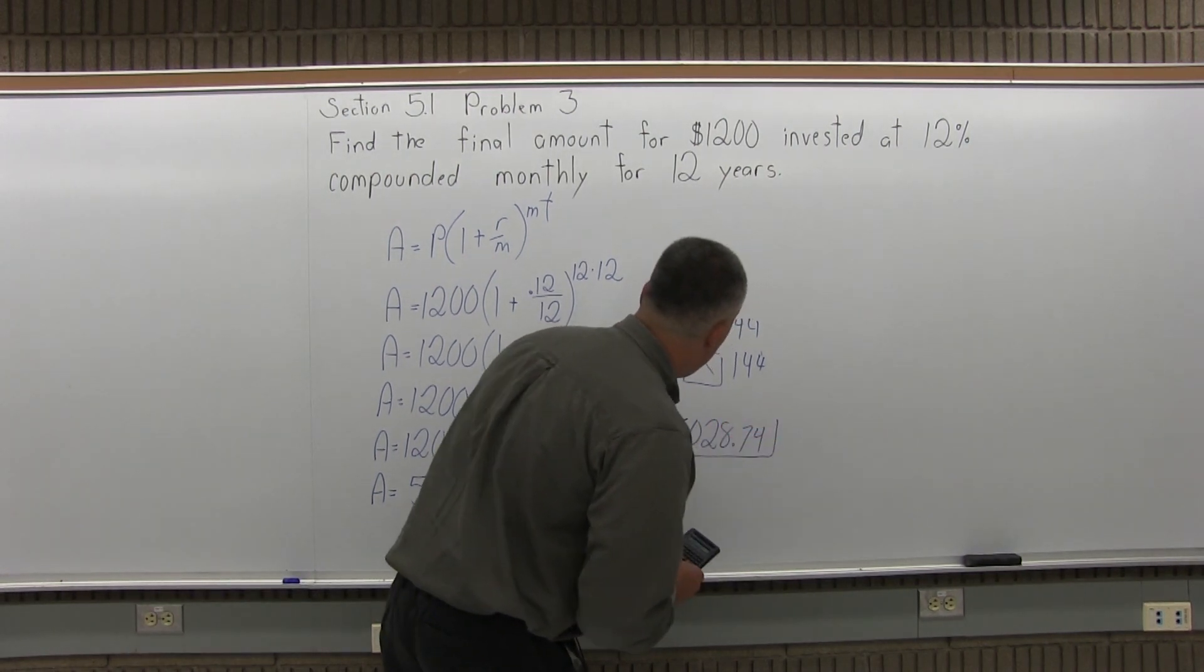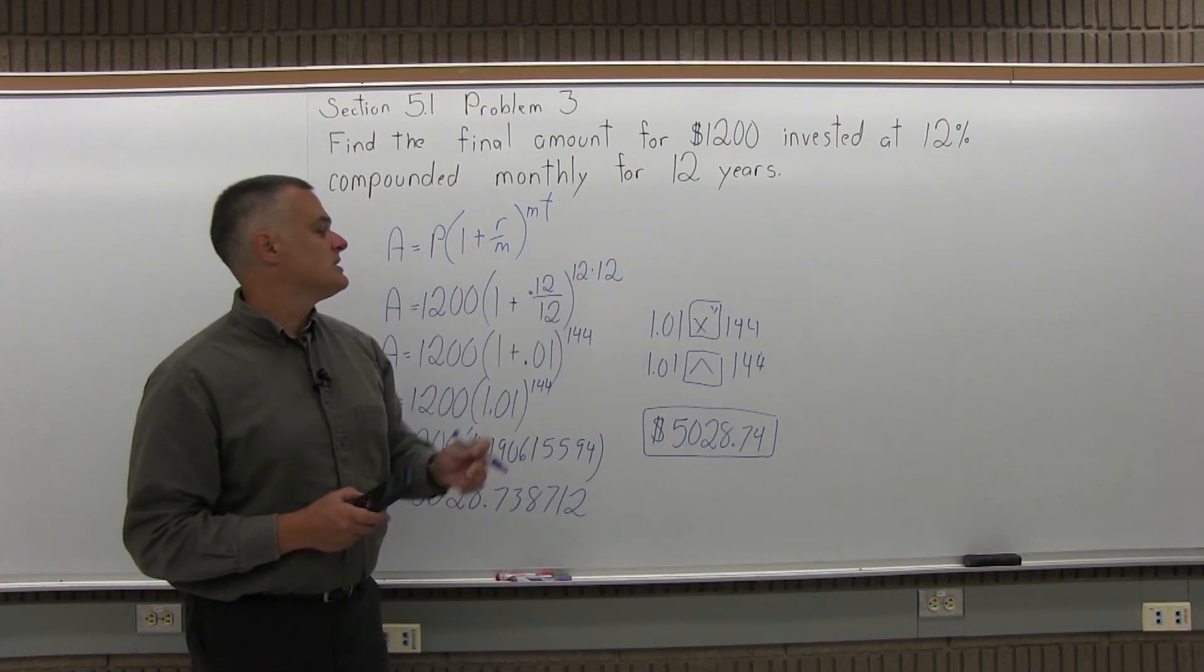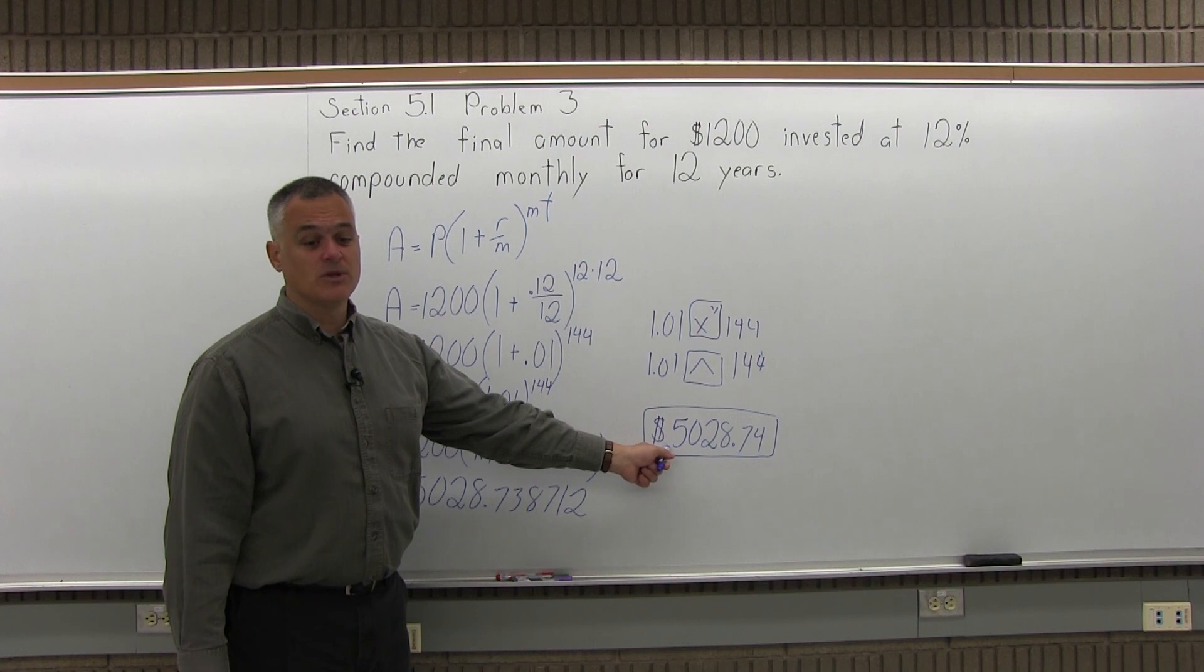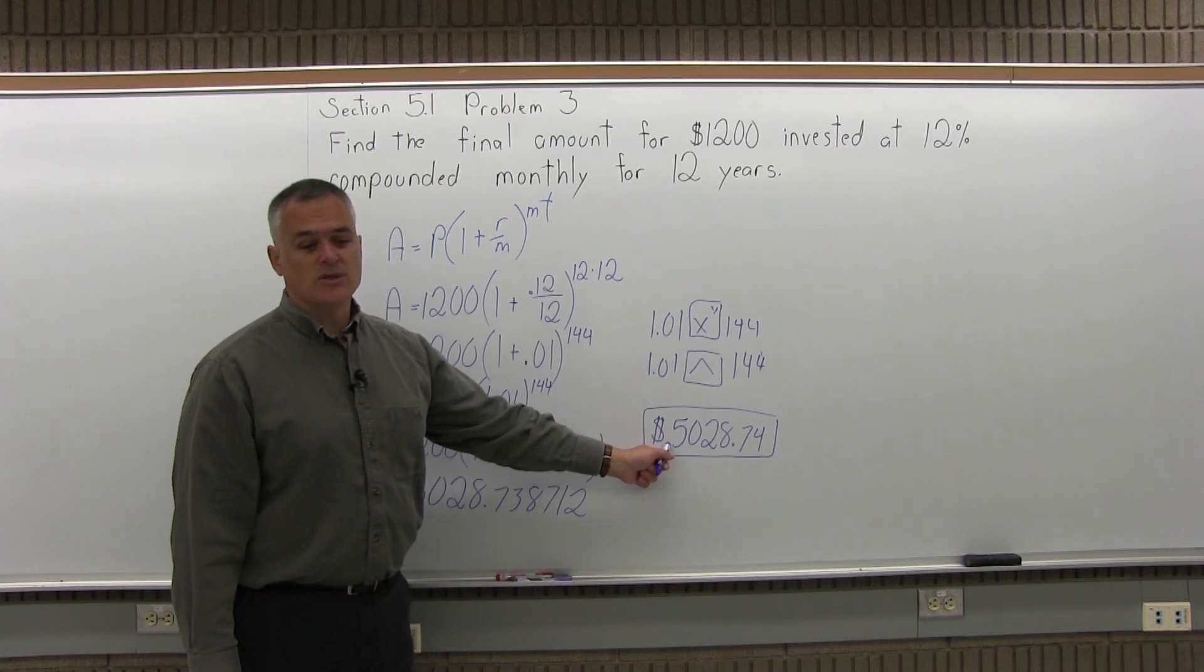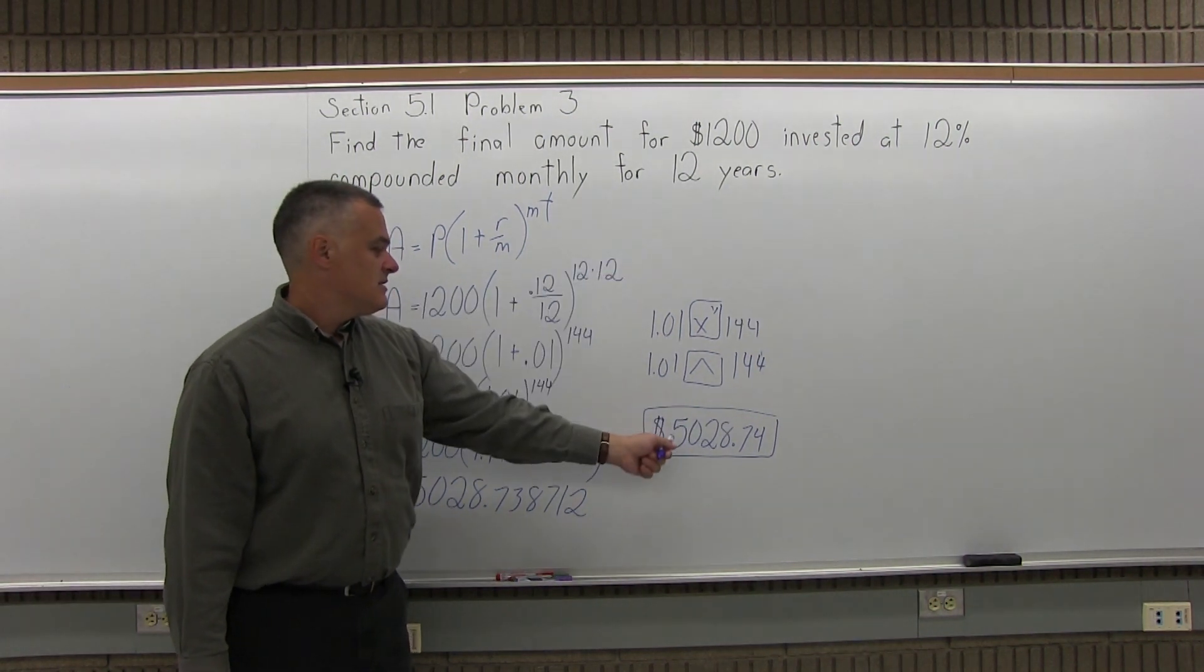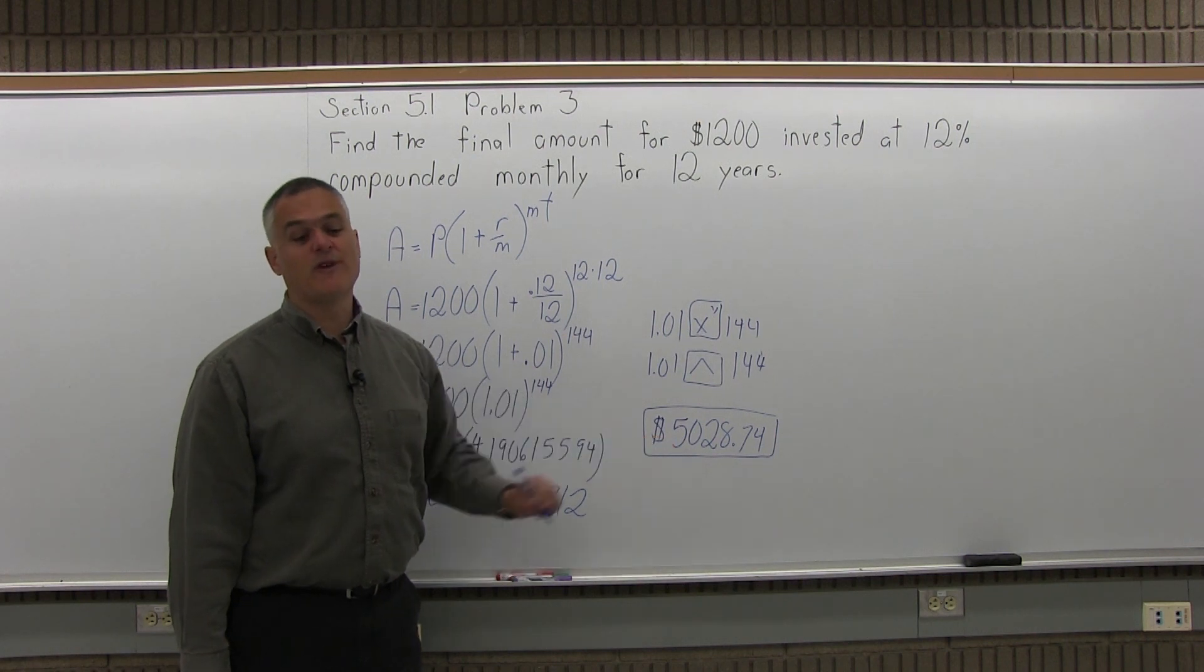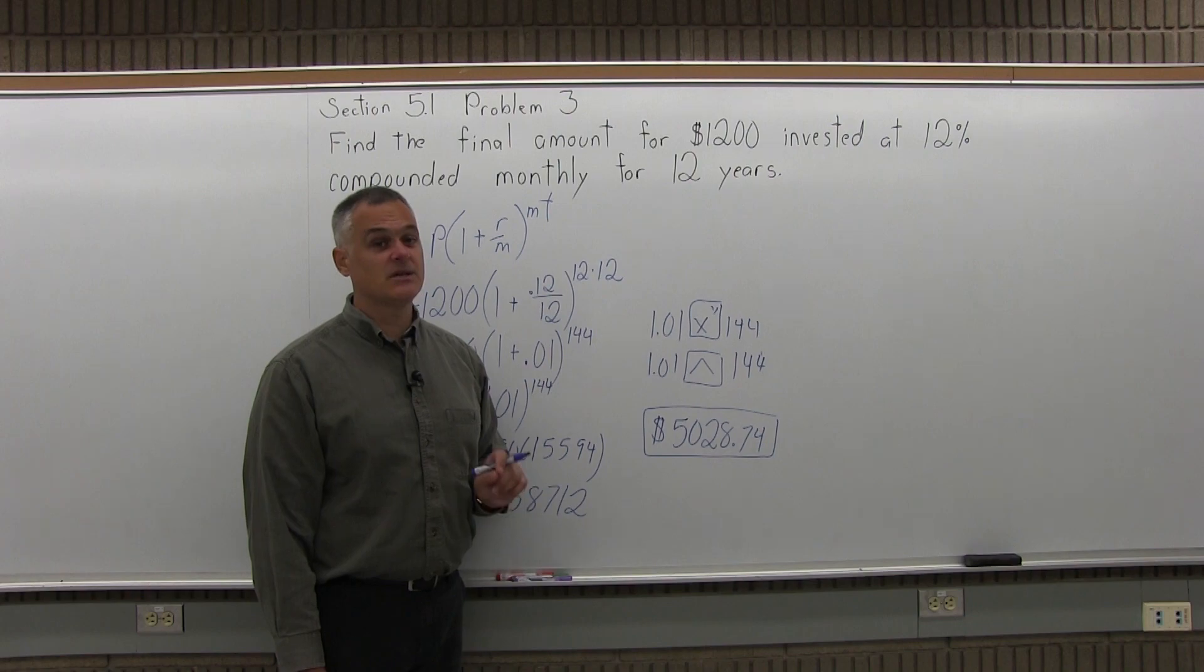That's the final amount after investing $1,200 for 12 years at 12% compounded monthly. Now just to make a comparison to question number two, if you remember the answer, it was a little under $3,000. It was like $2,900 and something. So the compound interest, instead of $2,900 or almost $3,000, you get a little over $5,000. So the compound interest does make a difference. They're both 12%, they're both for 12 years.